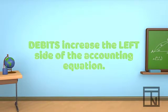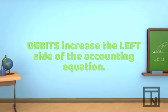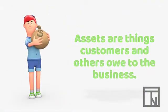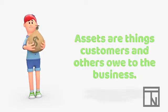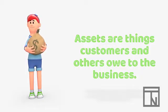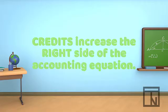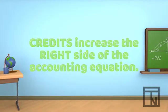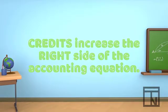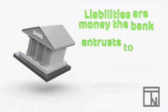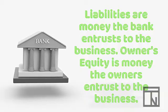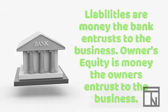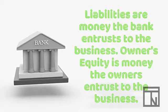Debit comes from the Latin word that means to owe. That seems weird since assets are things that we own and not that we owe, but in their minds, assets were things that customers and others owed to the business, so they called them debits. The number that increases the right side, or liabilities and owner's equity, was called a credit. Credit comes from the Latin word that means to entrust. Liabilities are money that vendors and banks entrust to businesses and expect paid back. Owner's equity is money that the owners entrust to the business to grow and expand.